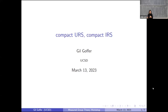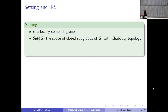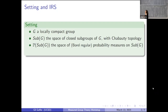URSs are very popular in this school, so I will present them as topological analogues to IRSs, although they are interesting for themselves. I will shortly recall the setting. G is a locally compact group — you can also have discrete groups in mind. Sub(G) is the space of all closed subgroups of G with the natural topology called the Chabauty topology. Above this space of subgroups, I have the space of probability measures on the space of subgroups.